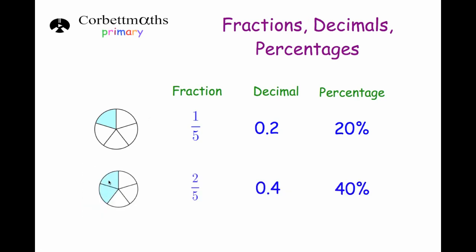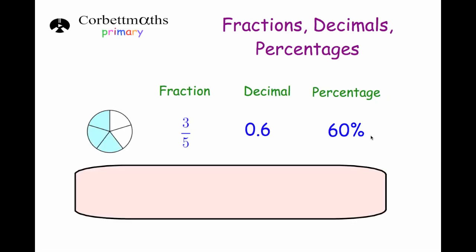Next, 2 fifths. If each section is worth 20%, two of them would be 40%. So 2 fifths is 40% as a percentage. And as a decimal number, if each section is 0.2, two of them would be 0.4. That's another important one — I would learn all the fifths, they're quite important.